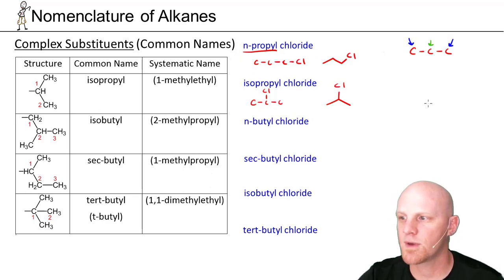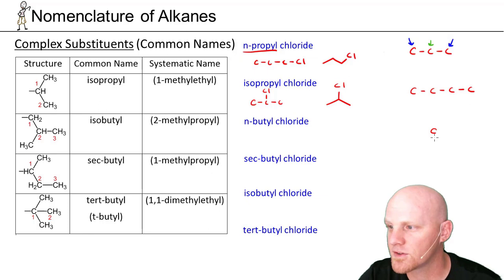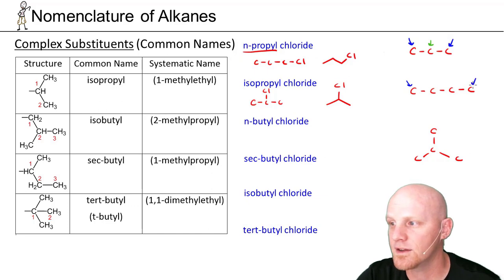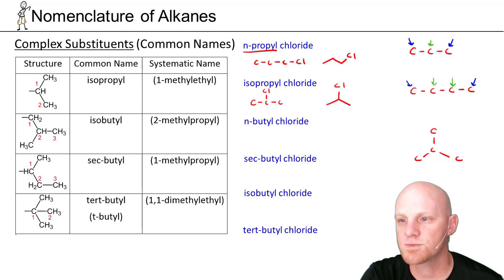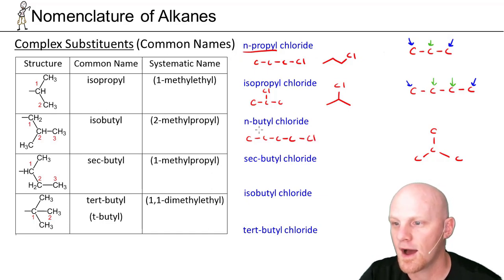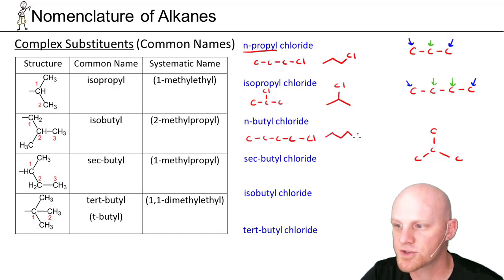For 4 carbons, we've got some options. You can have a 4-carbon straight chain, or a 4-carbon branched chain. Let's deal with just the straight chain first. With a straight chain, if I want to bond something else to this, I can either bond it to either end — and that's totally equivalent — or I can bond it to one of the middle carbons. If we just bond it to the end, it's just a straight chain substituent — they call it n-butyl chloride, short for normal butyl chloride, and the line angle structure looks like so.